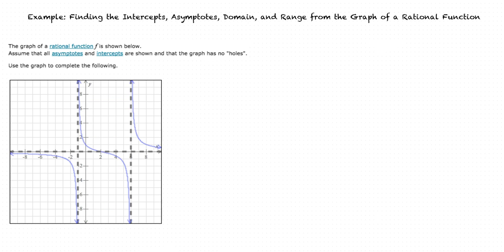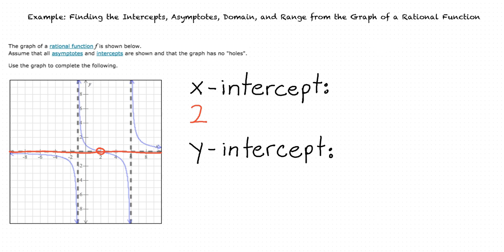Finally, we're asked to find any x-intercepts and y-intercepts of this graph. The graph intersects the x-axis at x equals 2, so the x-intercept is 2. The graph intersects the y-axis when y equals 1, so the y-intercept is 1.